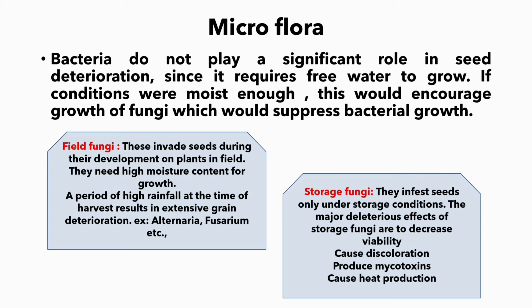There are two types of fungi: first one is field fungi, and another one is storage fungi. Field fungi — as the name implies — are fungi in which seeds during their development on plants in the field need high moisture content for growth. A period of high rainfall at the time of harvest results in extensive grain deterioration.